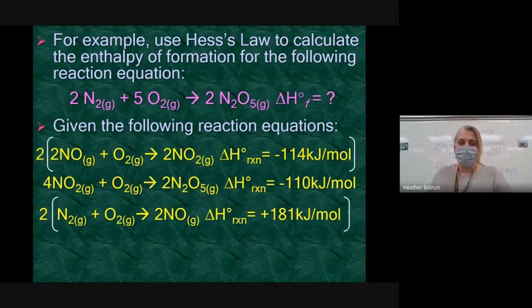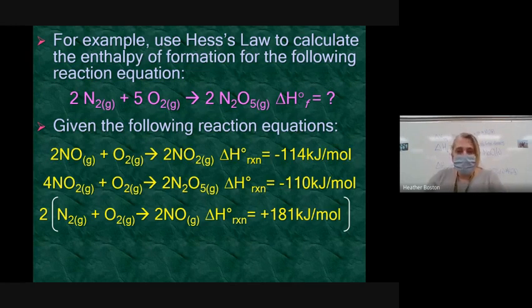I usually label the equations one, two, and three. So equation three has N2 gas, but it's only got one of them. So I'm going to have to multiply that by two. When I multiply this reaction by two, I multiply all the way across. So it'll be two N2, two O2 yields four NO, and then I'm going to multiply that 181 by two also.